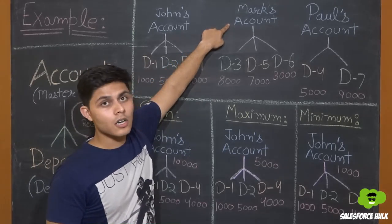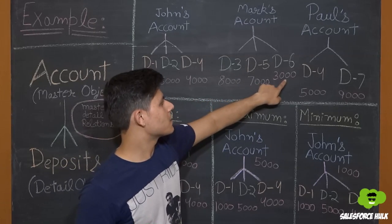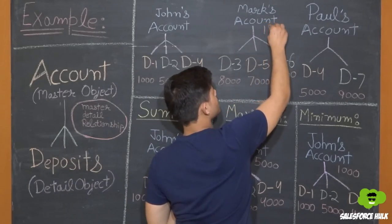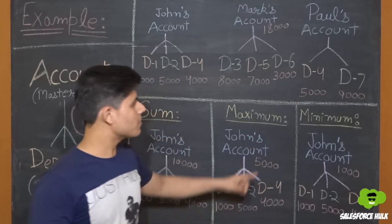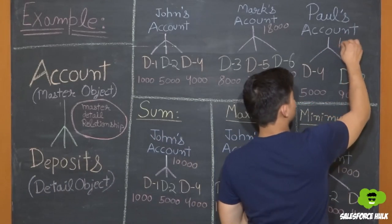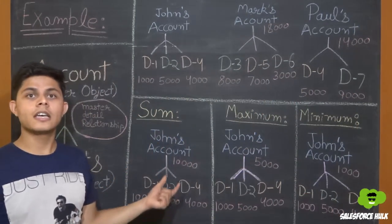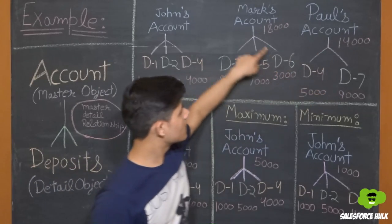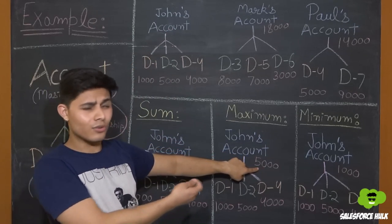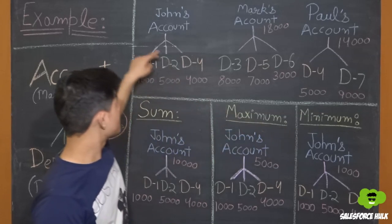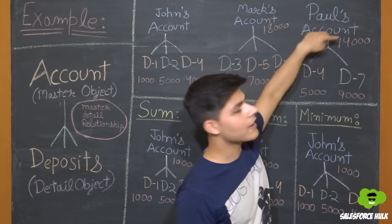For Mark's account, the sum field will display 8,000 plus 7,000 plus 3,000, which equals 18,000. For Paul's account, it will be 5,000 plus 9,000, which equals 14,000. For the maximum operation, Paul's account will display 9,000, Mark's account will display 8,000, and John's account will display 5,000. For the minimum operation, John's account will display 1,000, Mark's account will display 3,000, and Paul's account will display 5,000.